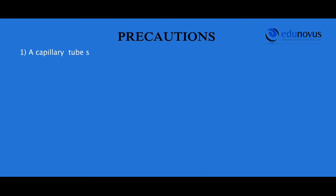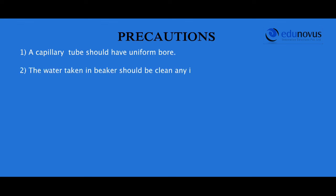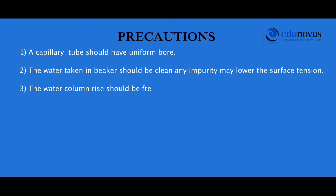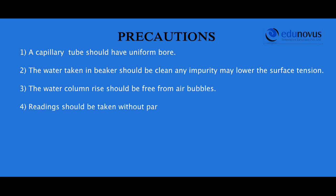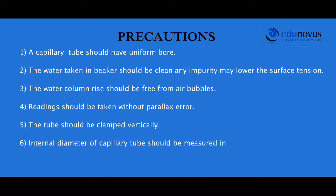Precautions: The capillary tube should have a uniform bore. The water taken in the beaker should be clean, as any impurity may lower the surface tension. The water column rise should be free from air bubbles. Readings should be taken without any parallax error. The tube should be clamped vertically. The internal diameter of the capillary tube should be measured in two mutually perpendicular directions. We are now able to determine the surface tension of any liquid by the capillary rise method using a traveling microscope.